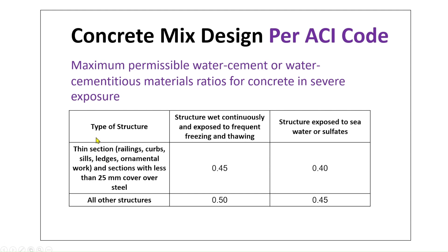For exposure conditions: if the structure is a thin section (railings, curbs, sills, ledges, or sections with less than 25 mm cover), we have two cases — structures continuously wet and exposed to frequent freezing and thawing cycles, and structures exposed to seawater or sulfates — giving water-to-cement ratios of 0.45 and 0.40 respectively. For other structures, the values are 0.50 and 0.45.